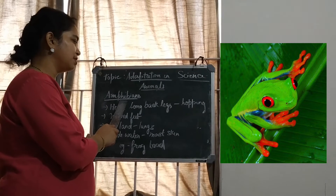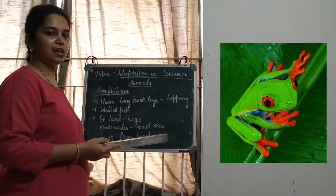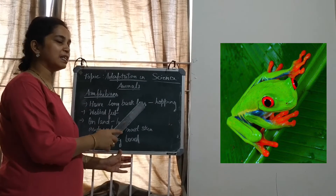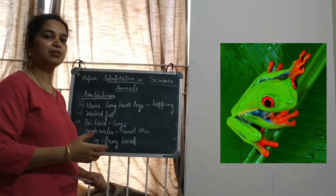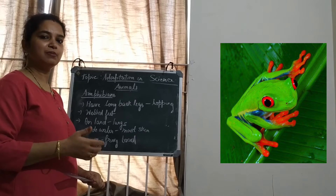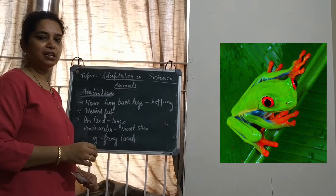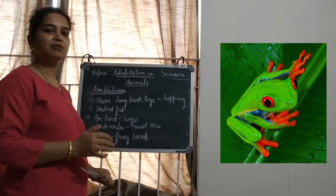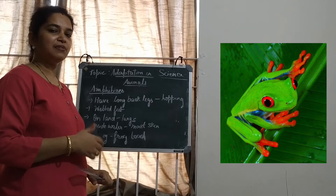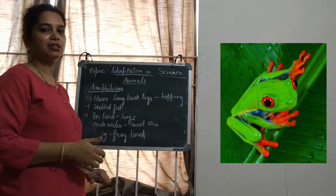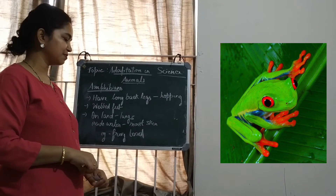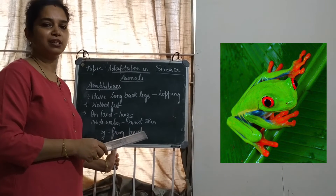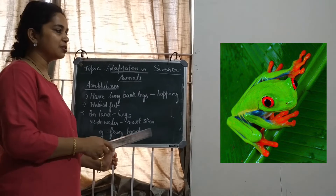Let's learn about amphibians. Amphibians are animals adapted to live both on land and in water. They have strong, long back legs so that they can move on land and hop. You might have seen the frog and toad — they move on land by hopping. They have webbed feet, meaning the toes and feet are connected by skin so that they can swim inside the water. When they live on land, they respire through lungs, and when inside water, they breathe through the moist skin. Frogs and toads also have a streamlined body so that they can swim inside water.